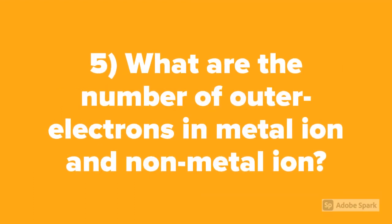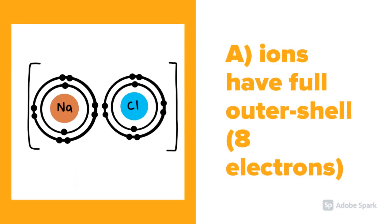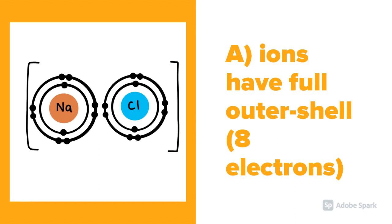Question number 5: What are the number of outer electrons in metal ions and non-metal ions? Both types of ions have full outer shells, which is 8 electrons.